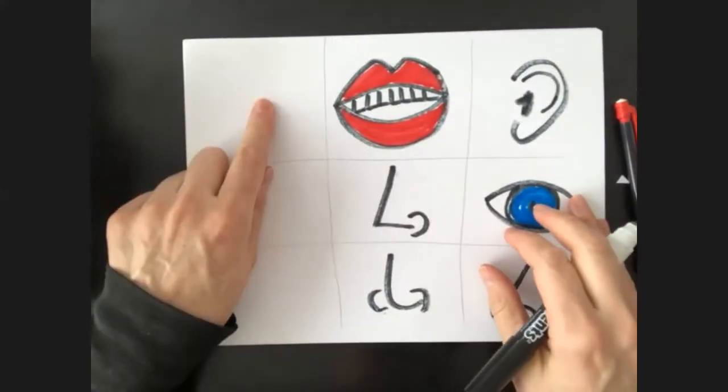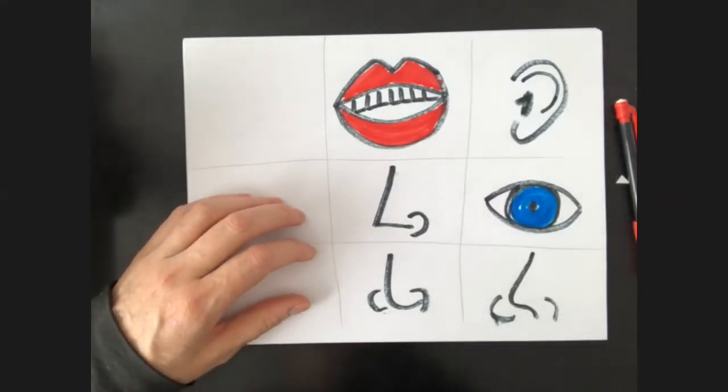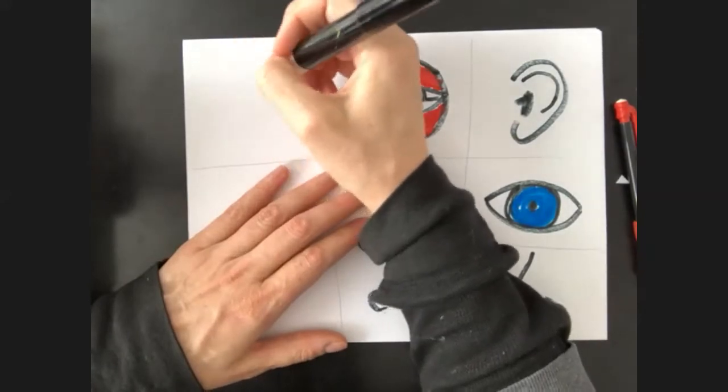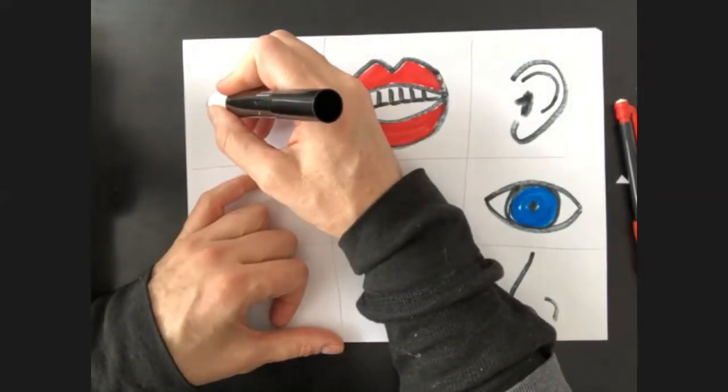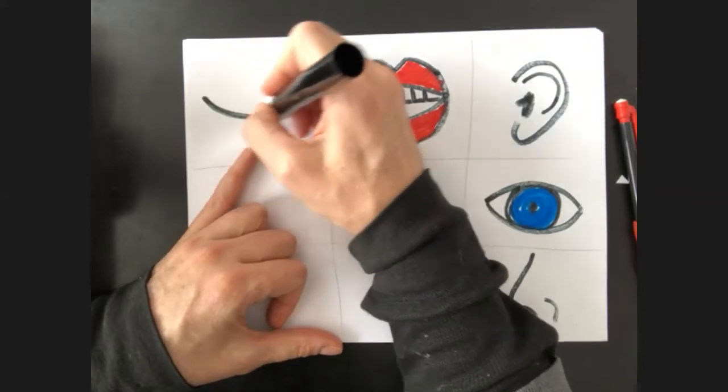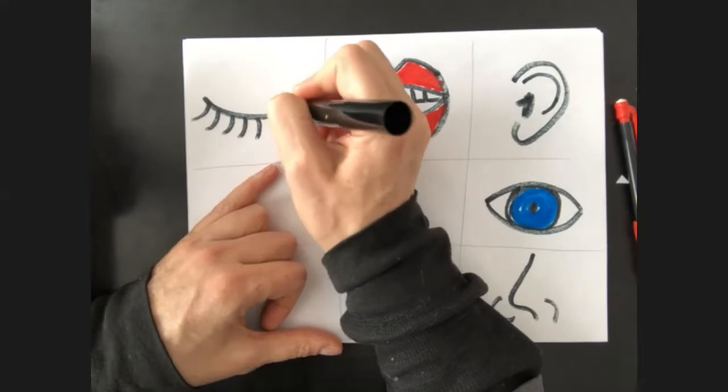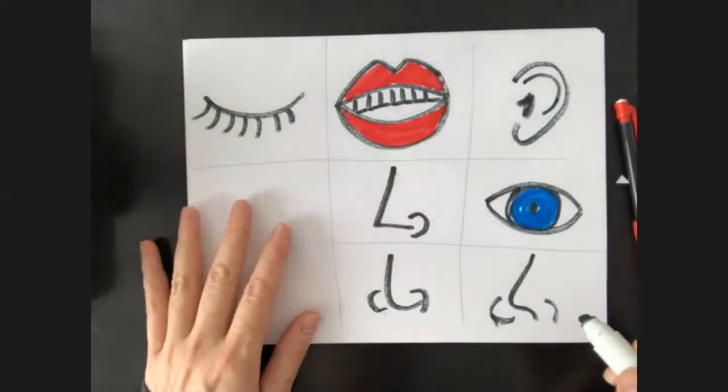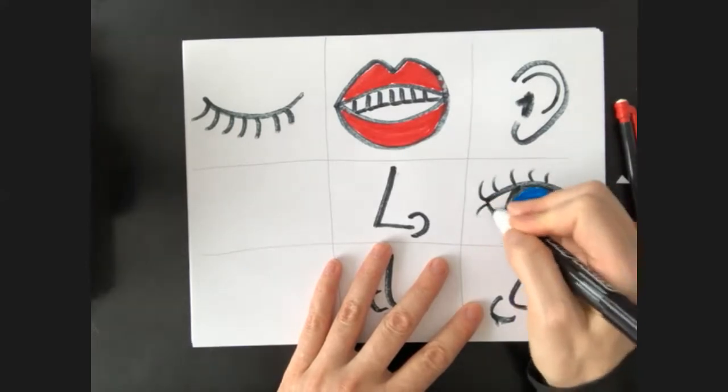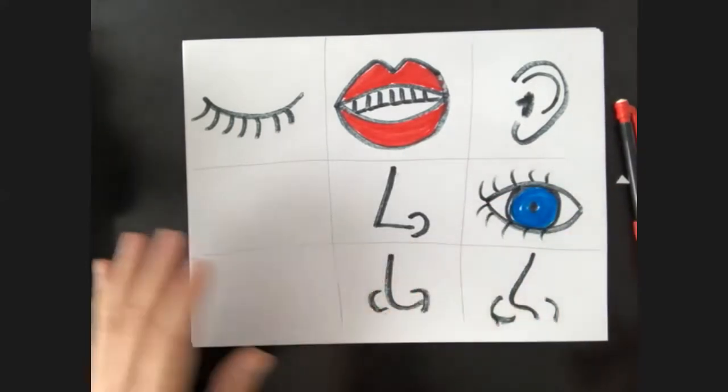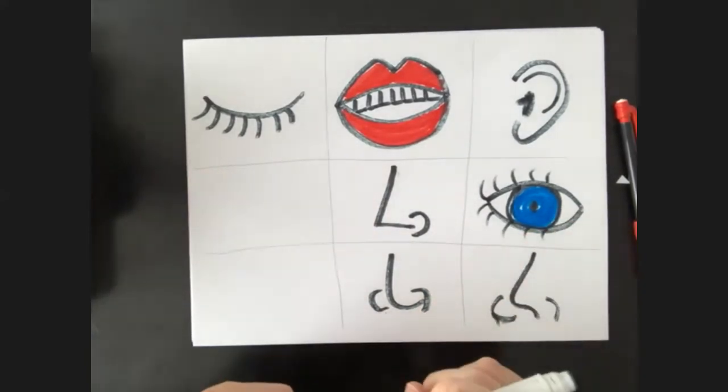Now in the next square, you're going to do another eye. You can do kind of similar. I'm going to do one, let's see, maybe one that's closed. That's kind of cool. I'm going to do eyelashes because I like them. So I did a closed eye, an open eye. What else do we have to do?